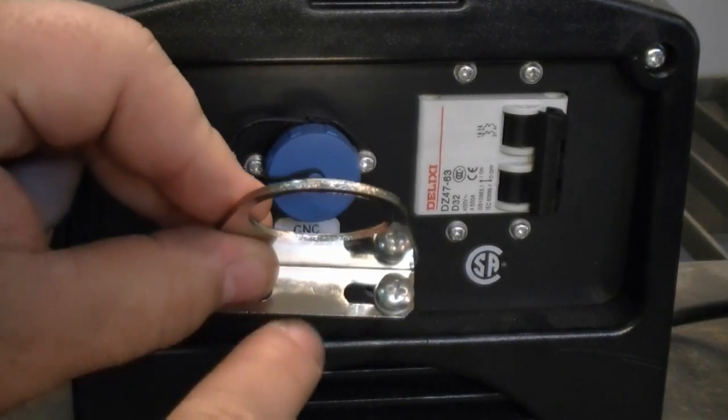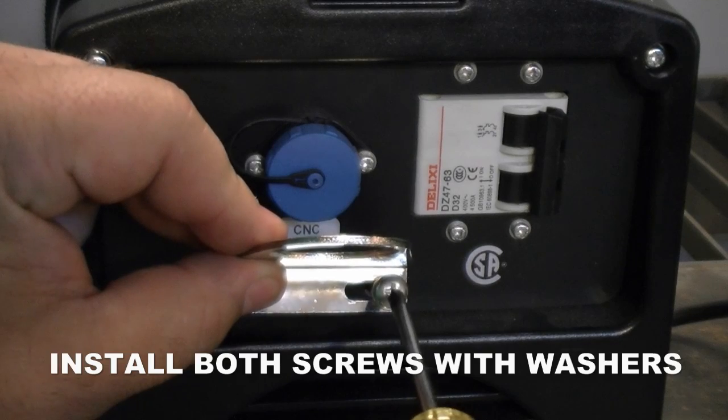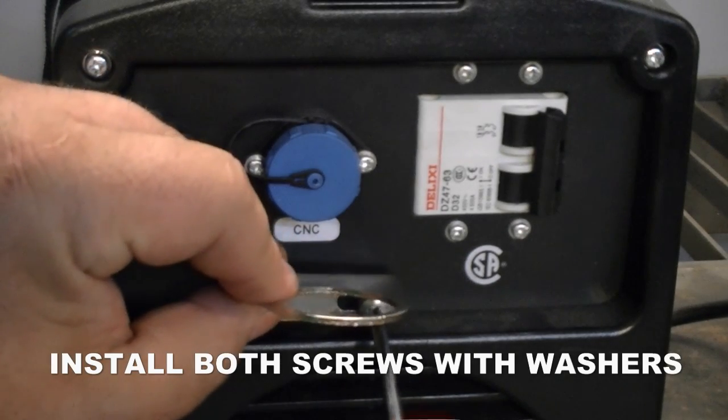Next, we'll want to put the bracket on. Make sure this part of the bracket is turned down. Take your Phillips head screwdriver and simply start the screw into the hole.